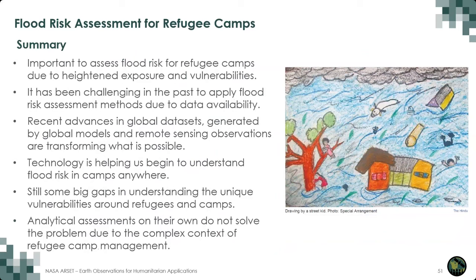In summary of this session: it's evident that it's important to assess flood risk for refugee camps due to heightened exposure and vulnerabilities of the people living there. We know that in the past there have been challenges in applying flood risk methods because of data availability in these contexts. But thanks to recent advancements in global datasets generated by global models and remote sensing observations, we're transforming what's possible and are able to begin to use this technology to support flood risk assessments in camps. However, as highlighted by Luxon and myself, these analytical assessments are not able on their own to solve the problem due to the very complex and unique context of refugee camps.